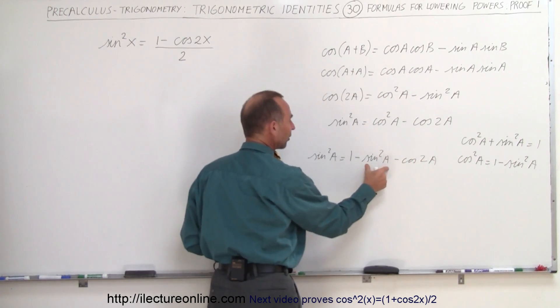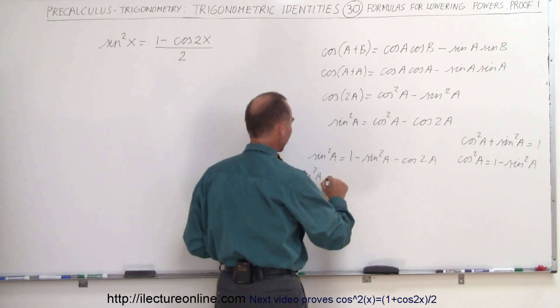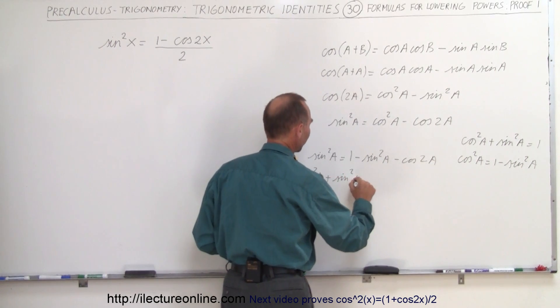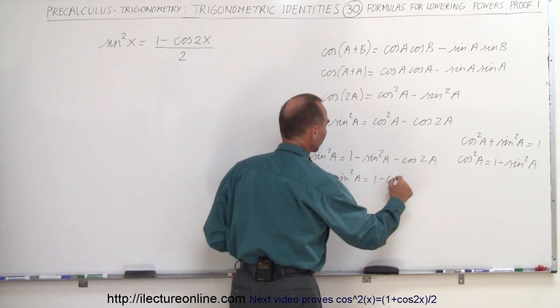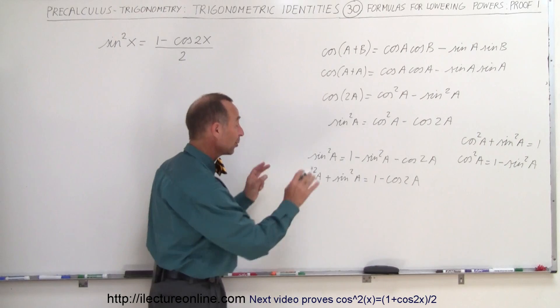And now we're going to move the sine squared of A to the left side. So now we have the sine squared of A plus the sine squared of A is equal to 1 minus the cosine of 2A. And I think now you can start seeing the resemblance between this and that.